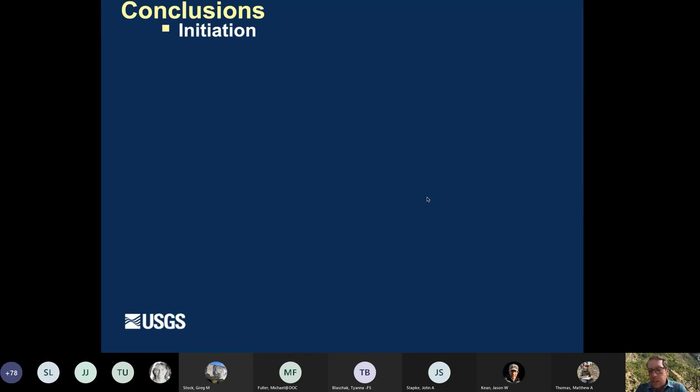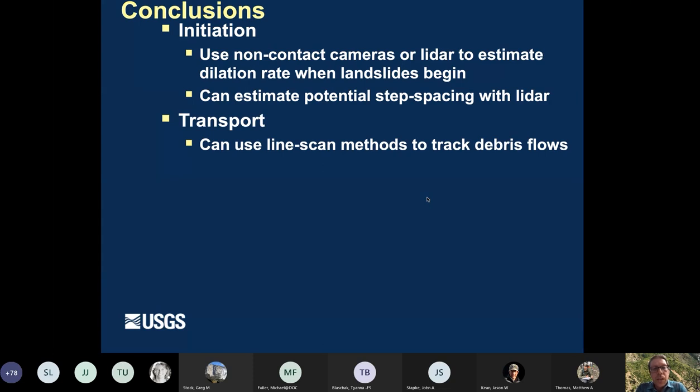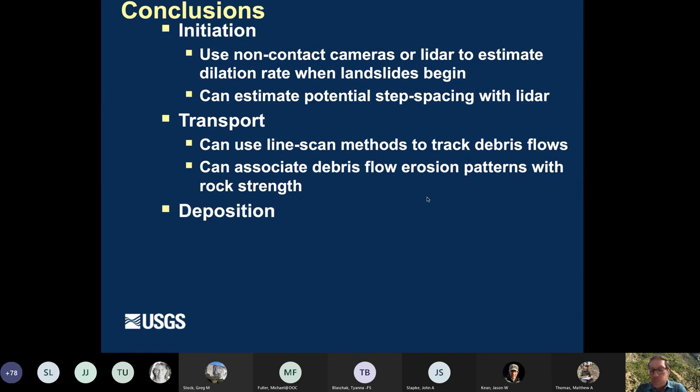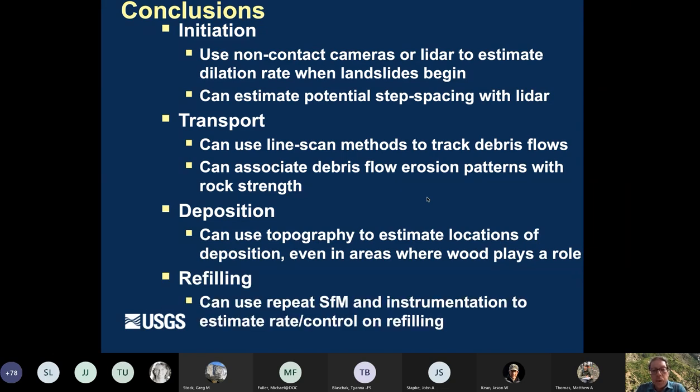So to kind of wrap things up, in terms of initiation, we're able to use cameras and LIDAR to estimate the dilation rate. When landslides begin, we're able to estimate the potential step spacing with LIDAR as well. In terms of debris flow transport, we showed that you can use this line scan method of a ground-based LIDAR to track debris flows. And you can associate the debris flow erosion patterns in large drainage spaces with rock strength. And then in terms of deposition, we can use topography to estimate locations of deposition, even in areas where wood plays a pretty large role. And then finally, debris flow refilling, we can use repeat structure for motion and instrumentation to estimate the rate and control on that refilling.